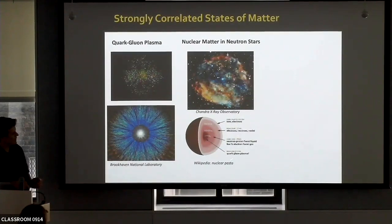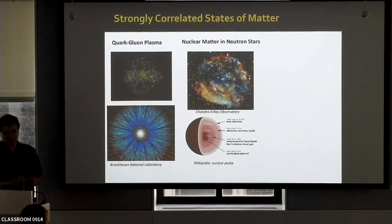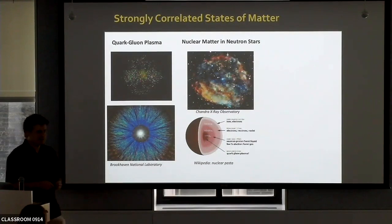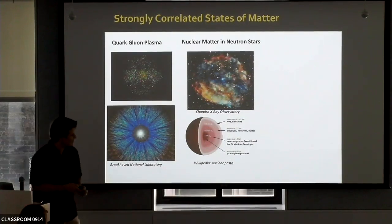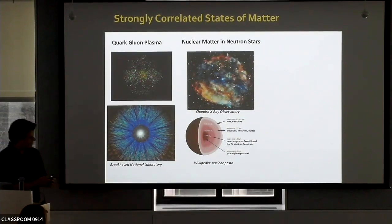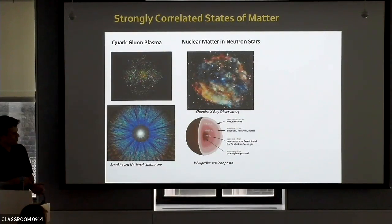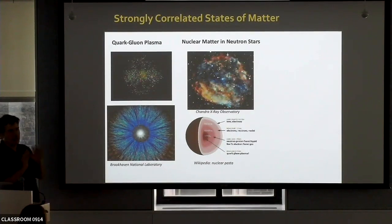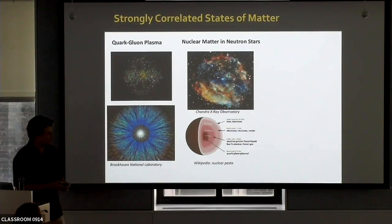This is taken from Wikipedia, and you can see that the different phases are called nuclear pasta — they have the spaghetti phase, the lasagna phase, the bucatini phase. The astrophysicists are much more creative than the condensed matter physicists in naming things. We have to learn a lot from them, I think.